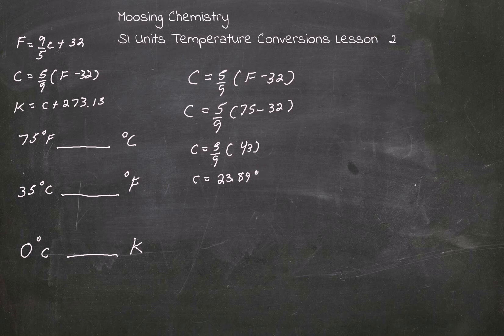All right, let's look at another problem. We'll convert 35 degrees Celsius to Fahrenheit. In this case, we're going to use a different formula: F equals 9 over 5 C plus 32.